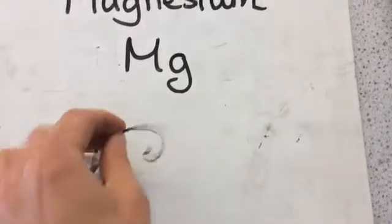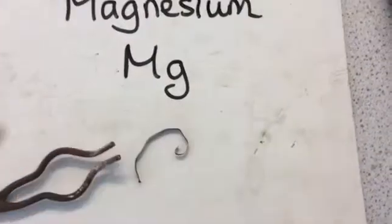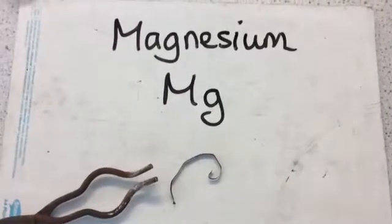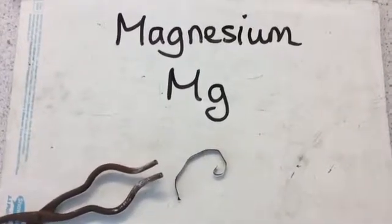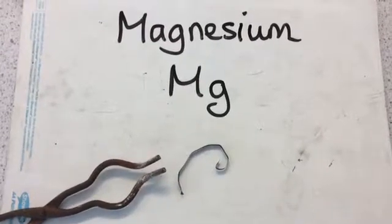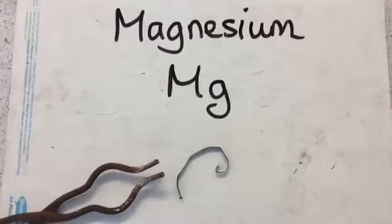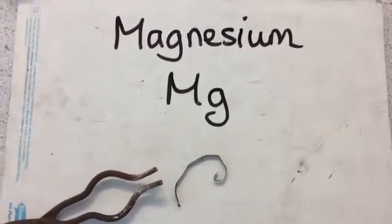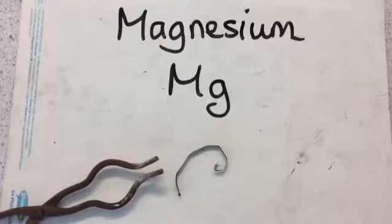You can see it's this kind of dark grey color and we're going to burn it and form the oxide, magnesium oxide. And then we're going to test out whether that magnesium oxide is an acid or an alkali. We're also going to be looking at what happens to the mass of the magnesium as we react it with oxygen to form the compound magnesium oxide.